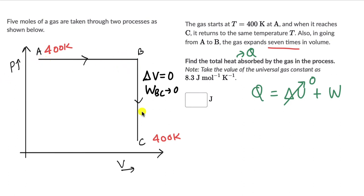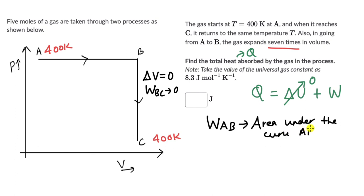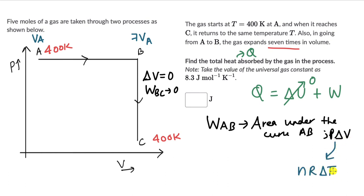The work done in process AB equals the area under the curve AB, which is P delta V. We can write this as nR delta T using the ideal gas law, where delta T is T_B minus T_A. The volume expands 7 times, so V_B equals 7 V_A. Since pressure at A and B are the same: T_A/V_A equals T_B/V_B, so T_B equals 7 times T_A equals 7 times 400 equals 2800 kelvins.